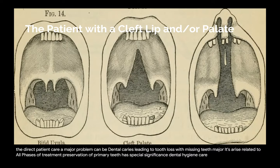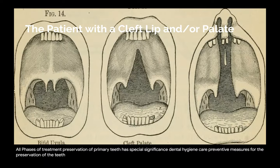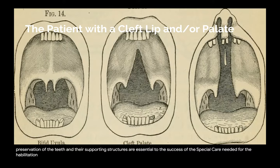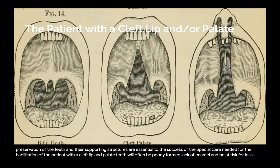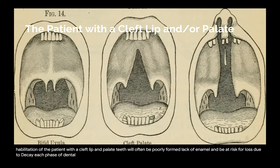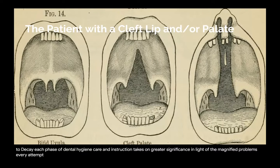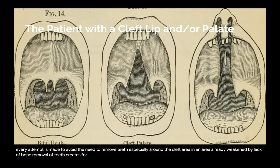Dental hygiene care: preventive measures for the preservation of the teeth and their supporting structures are essential to the success of the special care needed for the habilitation of the patient with a cleft lip and/or palate. Teeth will often be poorly formed, lack enamel, and be at risk for loss due to decay. Each phase of dental hygiene care and instruction takes on greater significance. Every attempt is made to avoid the need to remove teeth, especially around the cleft area, as removal of teeth in an area already weakened by lack of bone creates further complications. The presence of teeth encourages optimum arch growth.